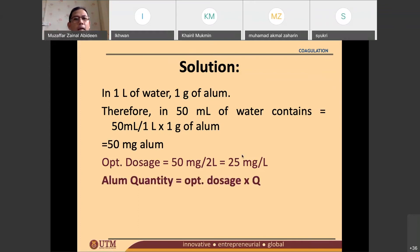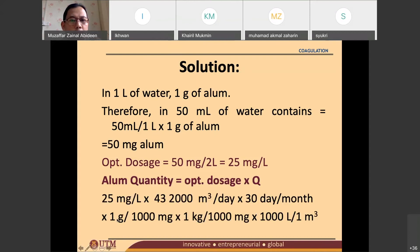So that alum quantity, always remember, that is the optimum dosage times Q. This is our optimum dosage. And our Q was 43,000 something just now. So 43,200 m³ per day times 30 days per month. And then, these numbers are being put here to eliminate the milligrams. So in kilograms.